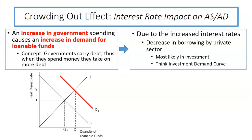So this is the crowding out effect. Due to the increased interest rates there's a decrease in borrowing by the private sector. It's more expensive. Most likely in the investment sector, think the investment demand curve. It could be personal consumption as well. So the loanable funds is going to impact the AS/AD after the government has spent their money. Because of the higher interest rates we're going to see a decrease in the demand curve. This concept is called the crowding out effect and it is definitely something that is talked about.